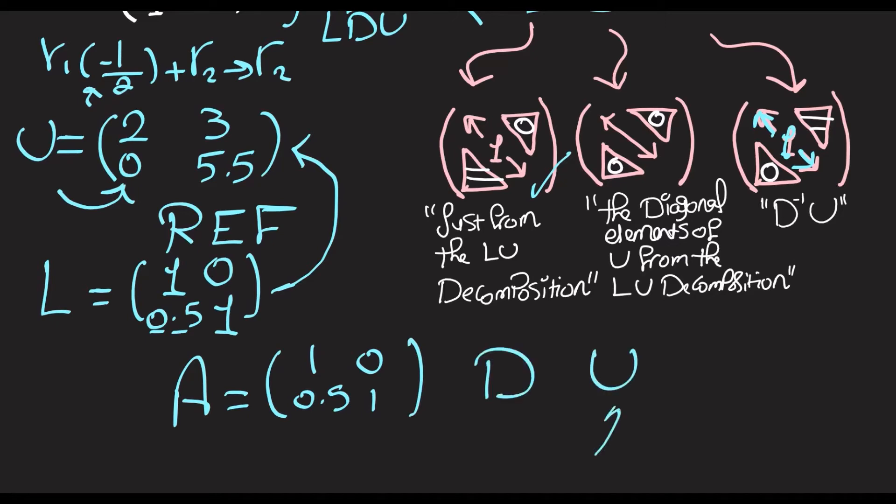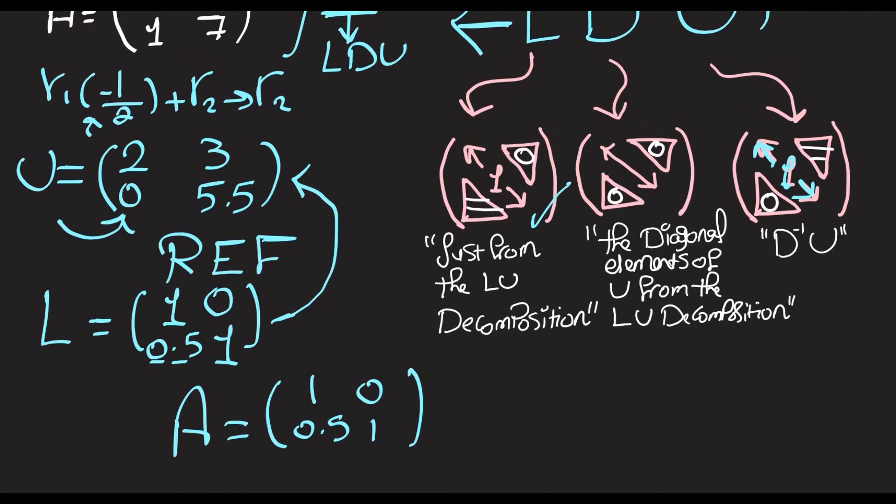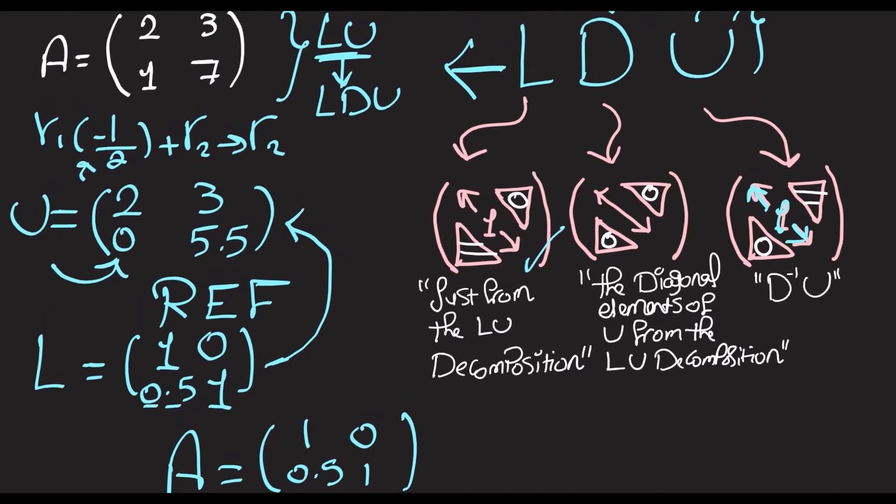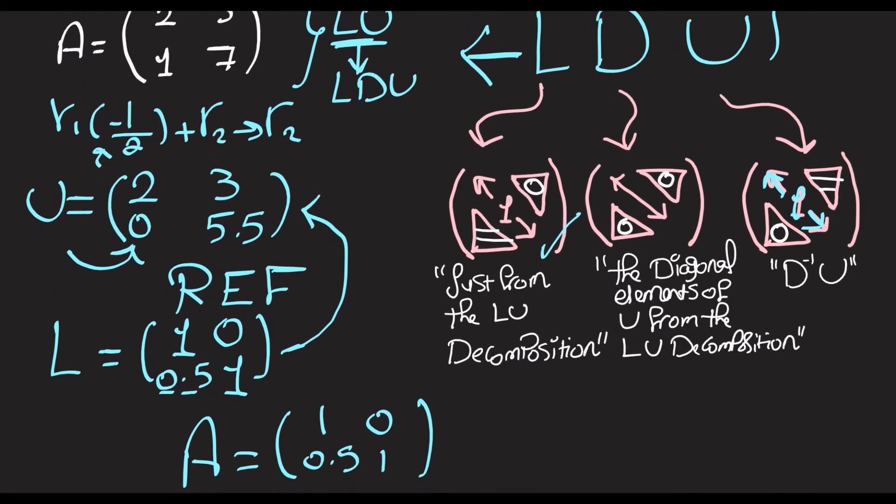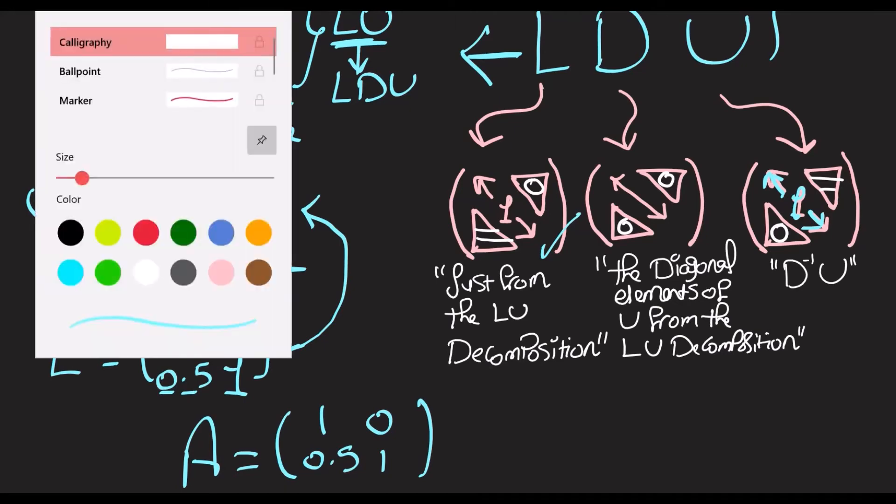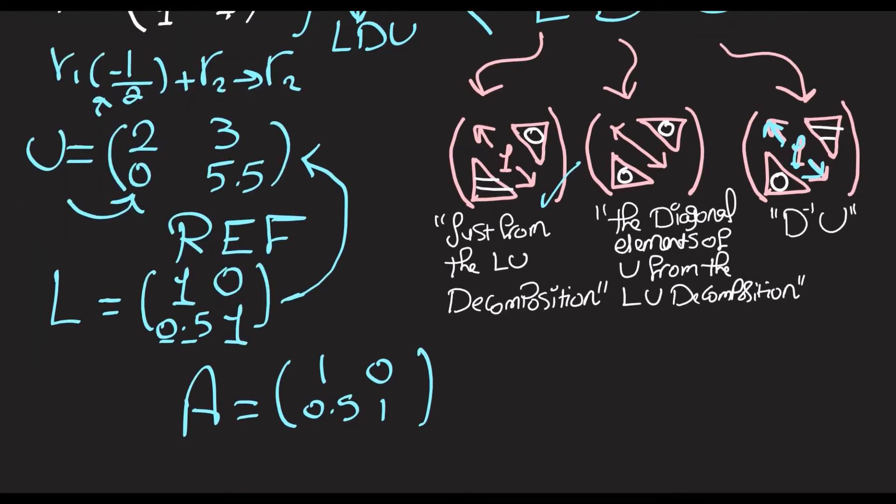So one great way of achieving this is making D hold the diagonal elements of U. So D is going to hold 2 and 5.5 on the diagonal, with zeros off-diagonal.